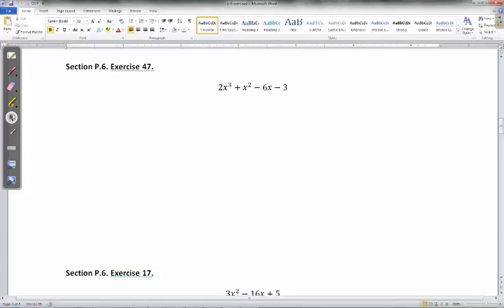Our second problem with factoring by grouping will probably just be our last problem. I don't usually do that many exercises with grouping. So we'll just do the same thing. Group the first 2 terms, group the second 2 terms. We'll pull out an x squared. From the first 2, we'll have 2x plus 1.